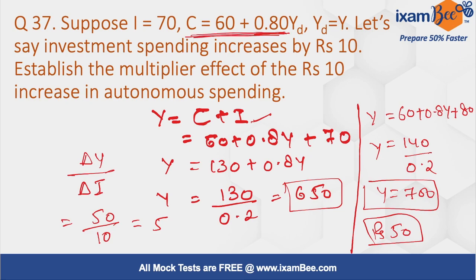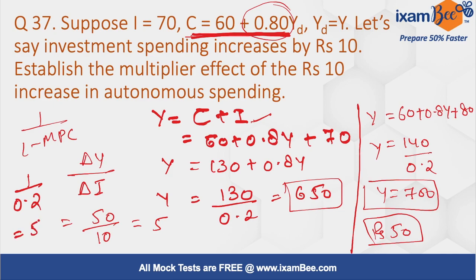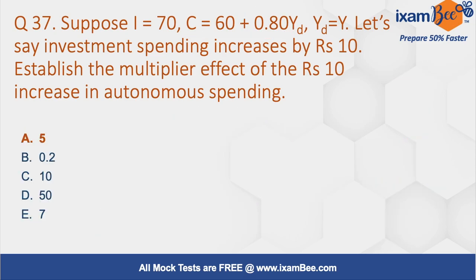We can also find the multiplier using the consumption function formula: 1 upon 1 minus MPC. With MPC equal to 0.8, it becomes 1 upon 0.2, which equals 5. Questions on the multiplier have been frequently asked in past years, so prepare well. The answer for this question is 5.